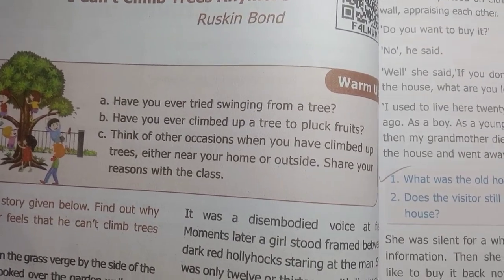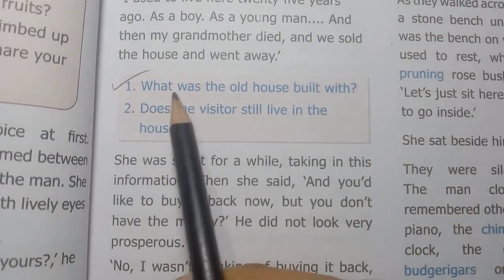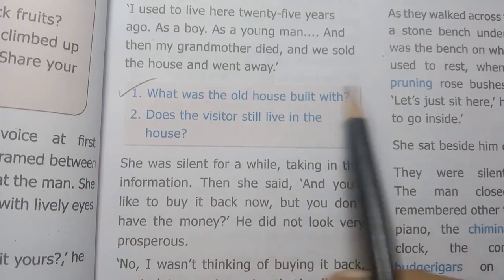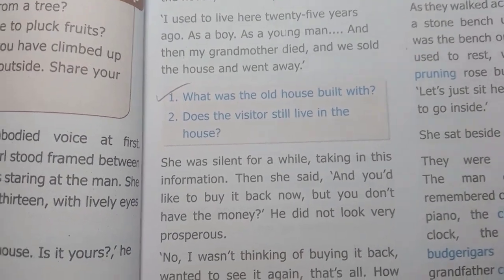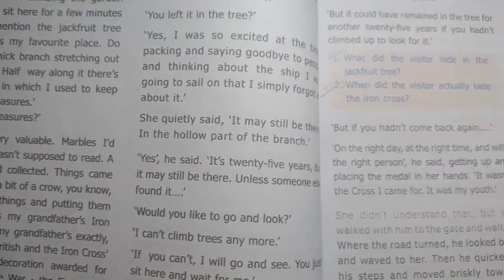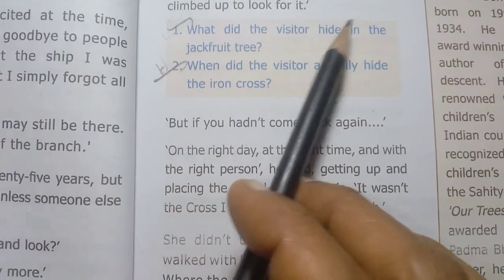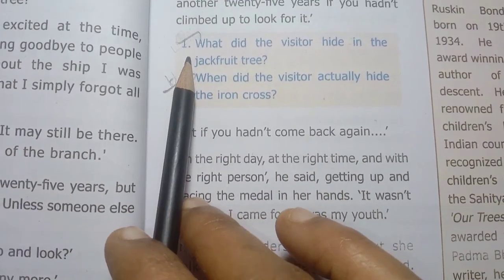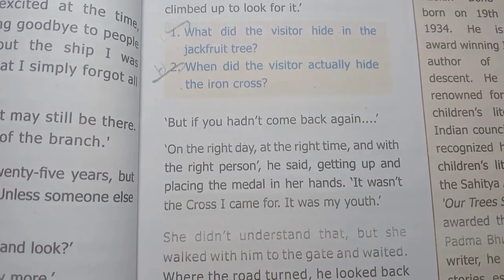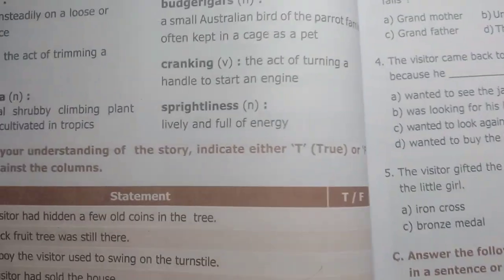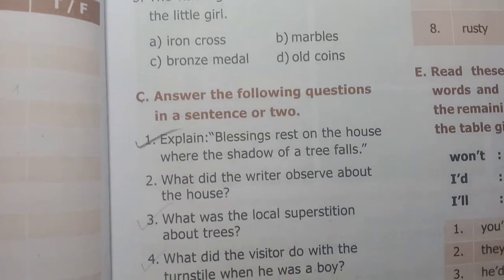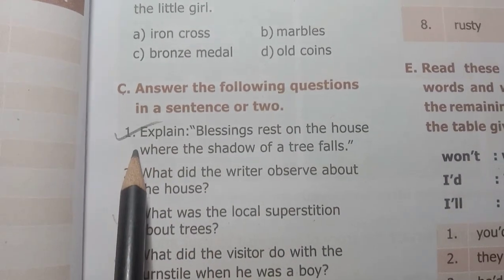I Can't Climb Trees Anymore. Page number 29, first one important question: what was the old house built with? That is an important question. Page number 31, first one — visitor hides in the jackfruit tree, important question. Second one is a half-yearly question. Page number 33, following questions: first one important, third important, fifth one is a half-yearly question, sixth one, eighth and tenth are important questions.